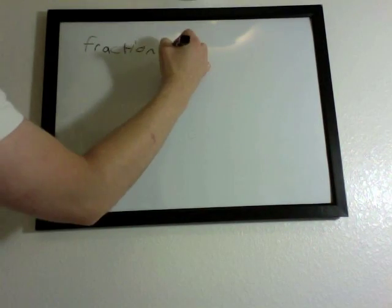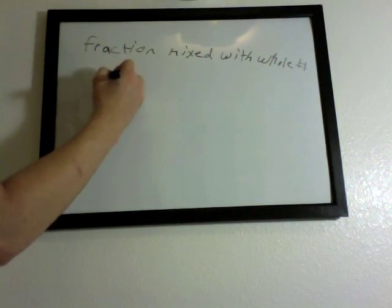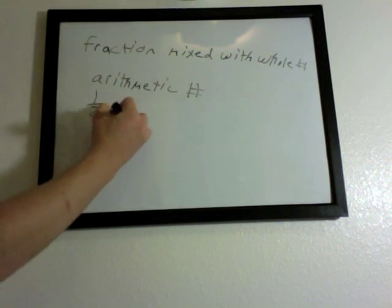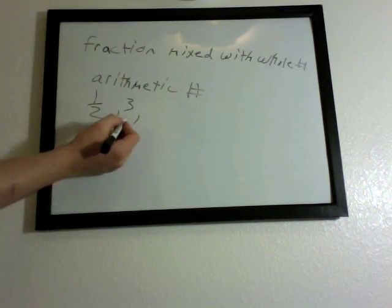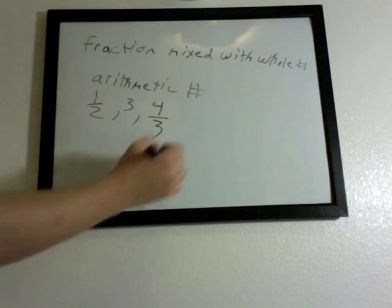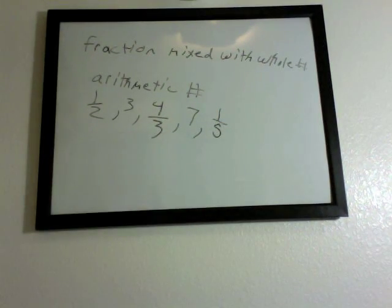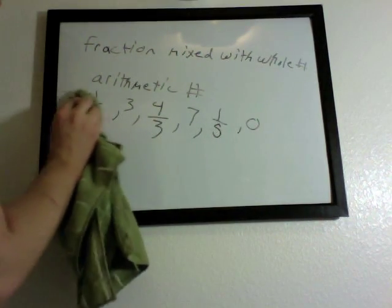Let's go over another definition. A fraction mixed with a whole number are called arithmetic numbers. So fractions mixed with whole numbers are called arithmetic numbers. For example, one half is a fraction, and three is a whole number — both are arithmetic numbers. You can think of four, three, seven, one, five, zero — any of those numbers would be arithmetic numbers: whole numbers mixed with fractions.